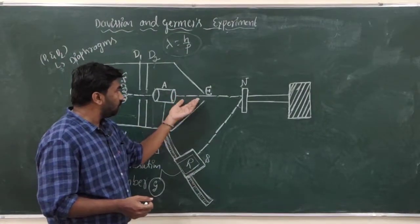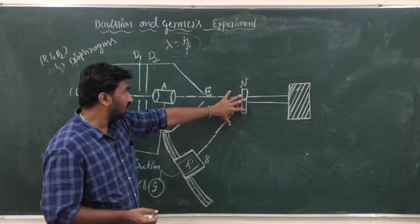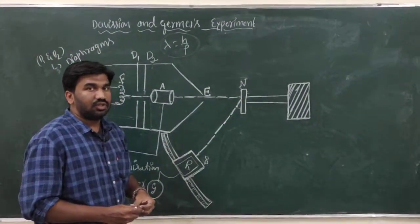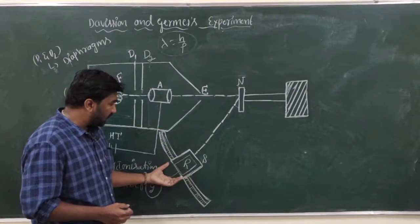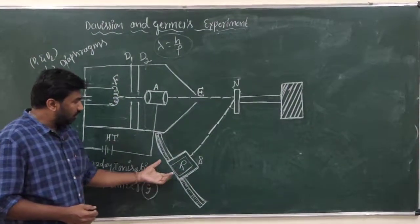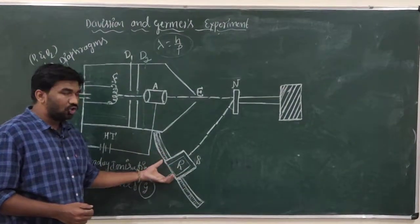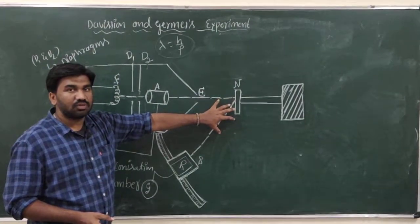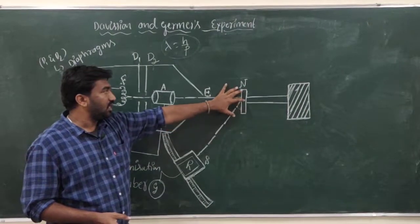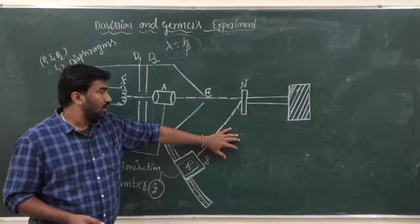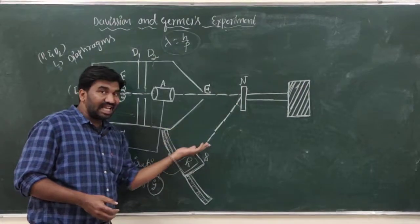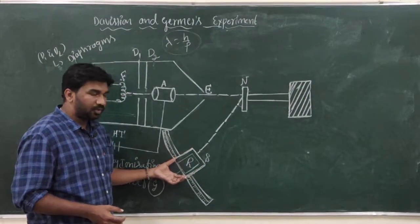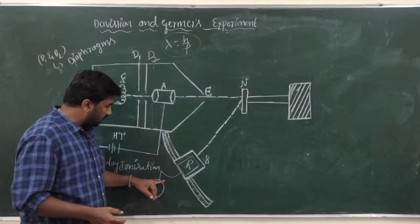When these electrons come out from the cylinder, they hit the target — our target is a nickel crystal. When these electrons strike the nickel crystal, they get scattered. These scattered electrons are detected using a detector, which is a Faraday ionization chamber. There are also chances of secondary electrons being produced by these nickel crystal atoms. Secondary electrons are prevented by a shielding chamber by applying a retarding potential. This detector is also a movable detector, connected to a sensitive galvanometer.